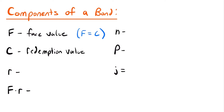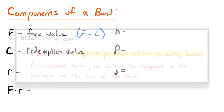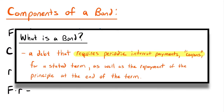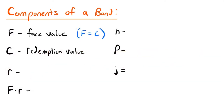Lowercase r represents the coupon rate, which determines the value of each coupon paid for the bond. A bond requires periodic interest payments called coupons, and r is the rate that determines the value of those coupons. Capital F times lowercase r — the face value times the coupon rate — represents the amount of each coupon. So the coupon amount is a certain percentage of the face value.